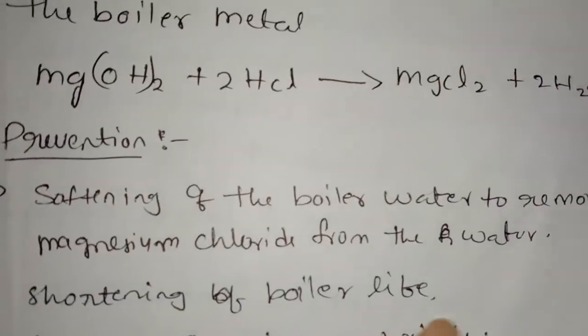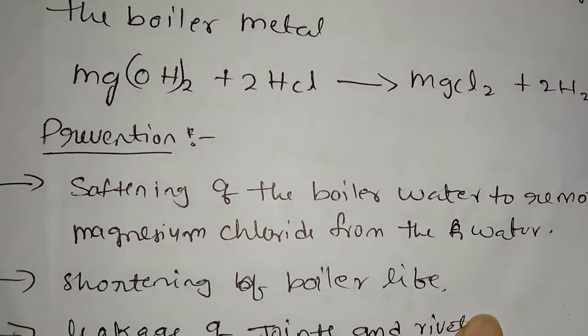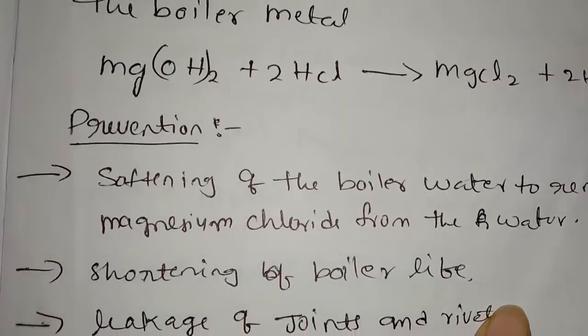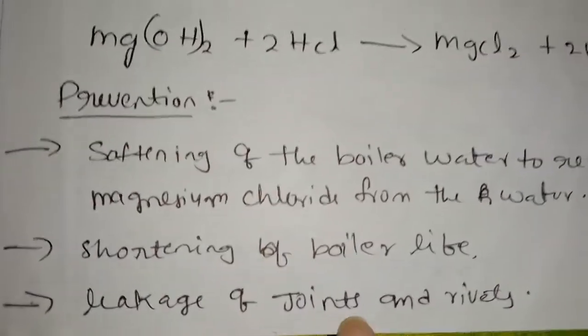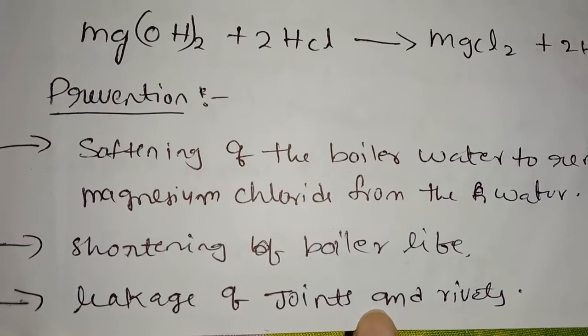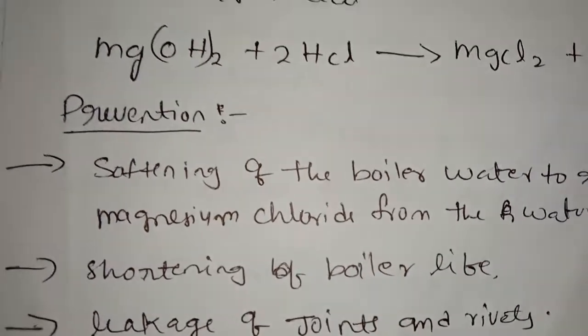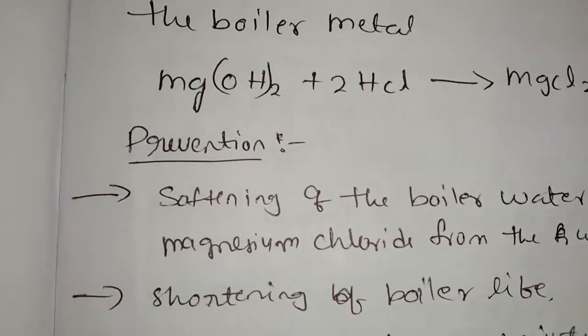The disadvantages of boiler corrosion include shortening of the boiler life — the life of the boiler becomes weak — and leakage of joints and rivets. These are the preventions.